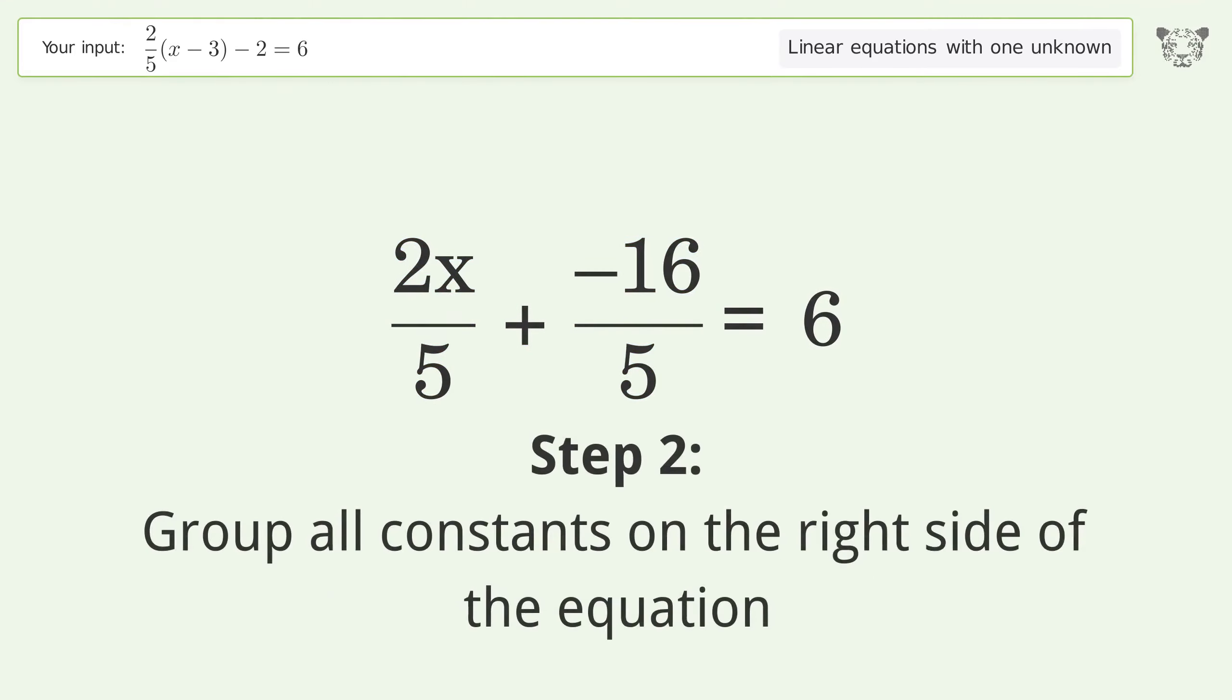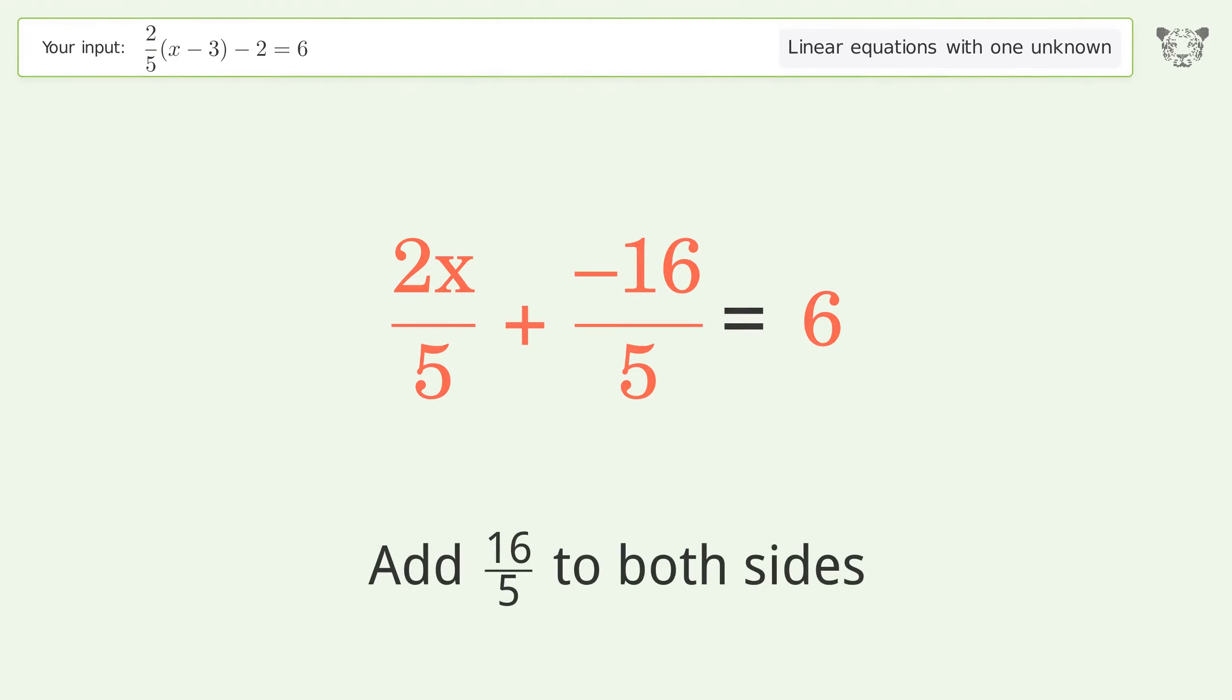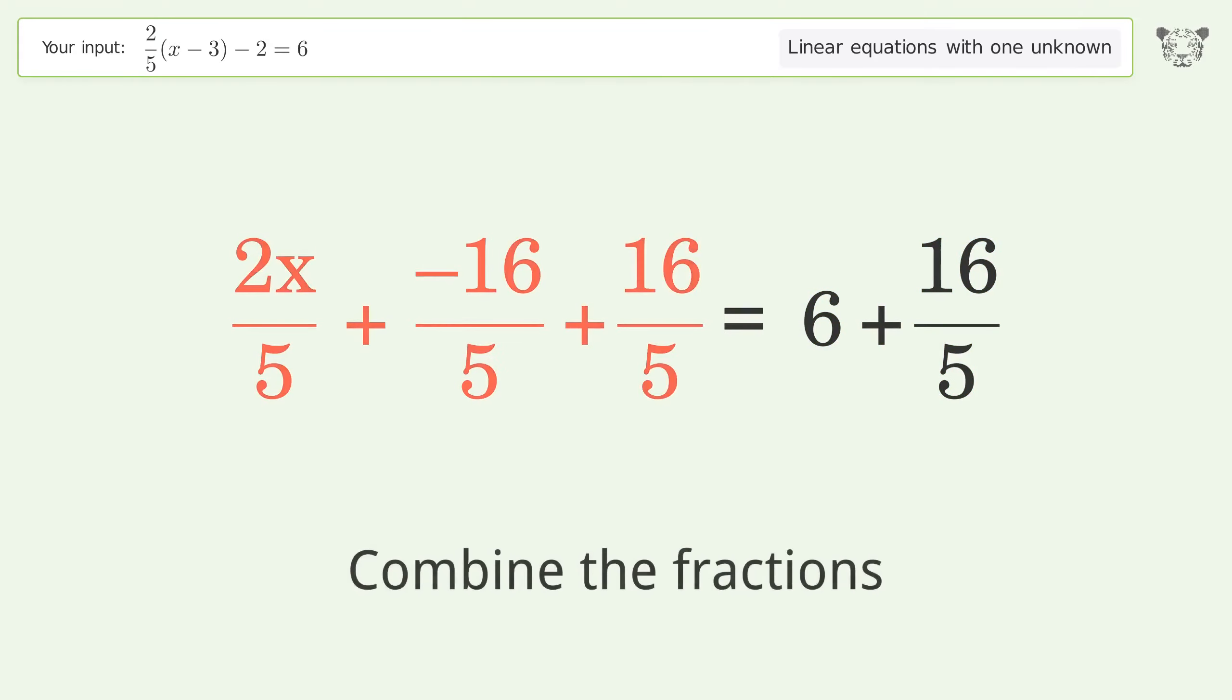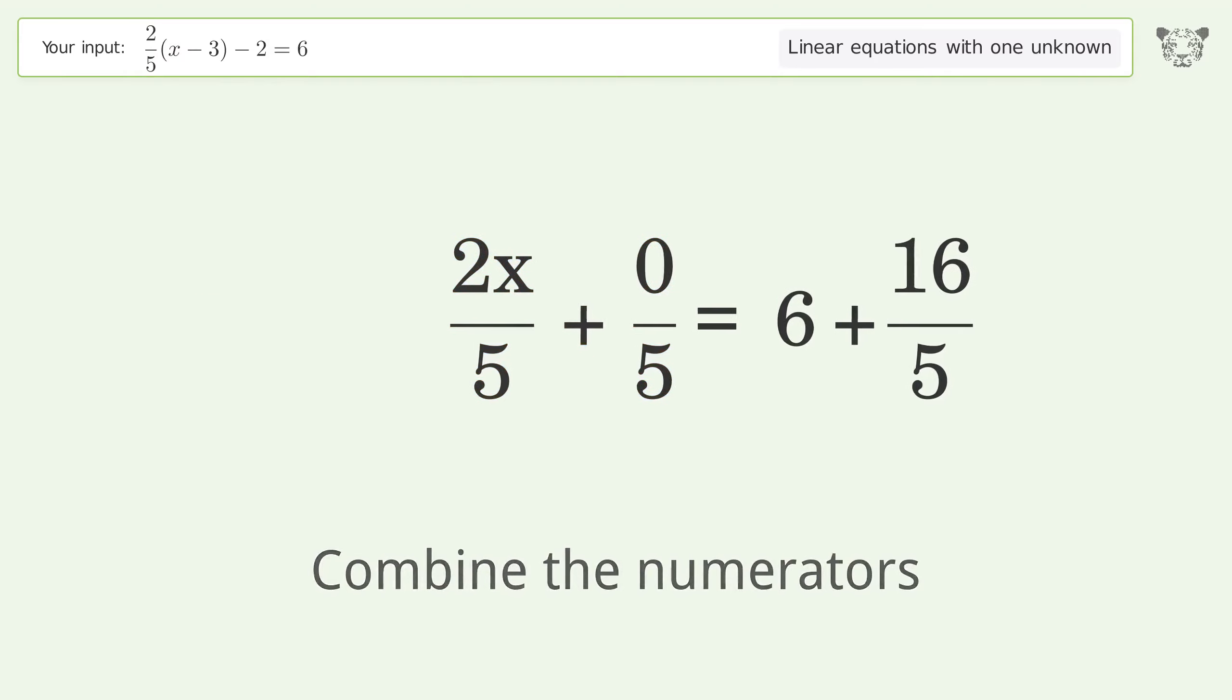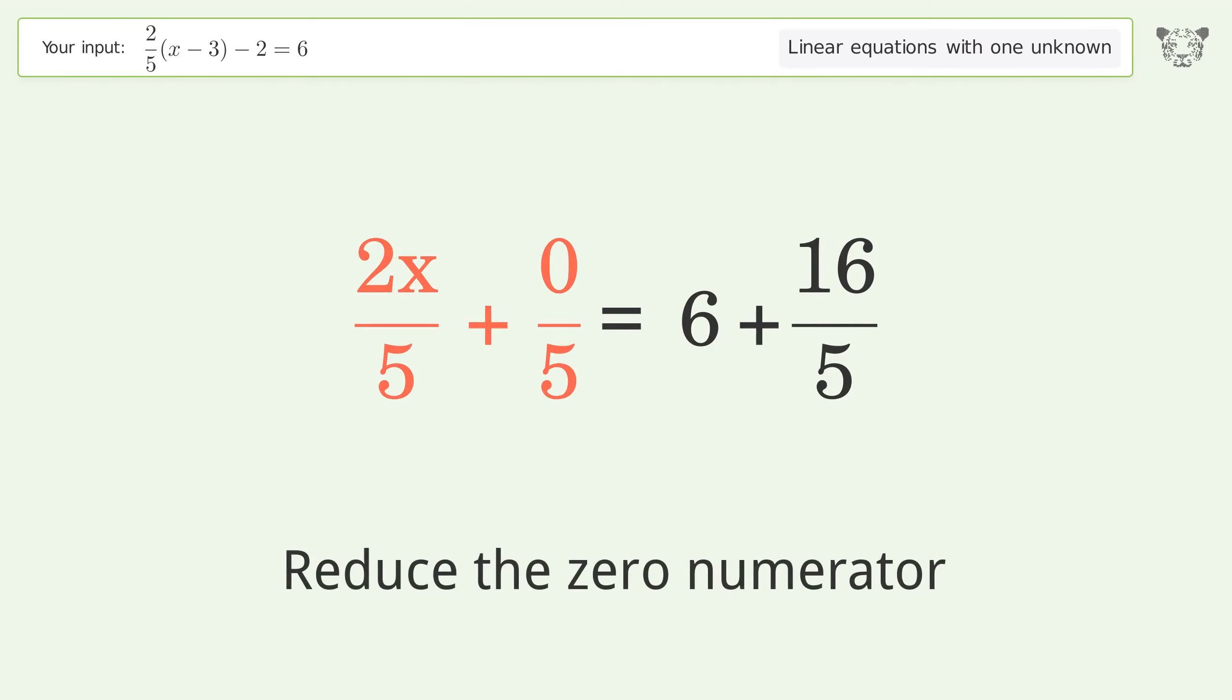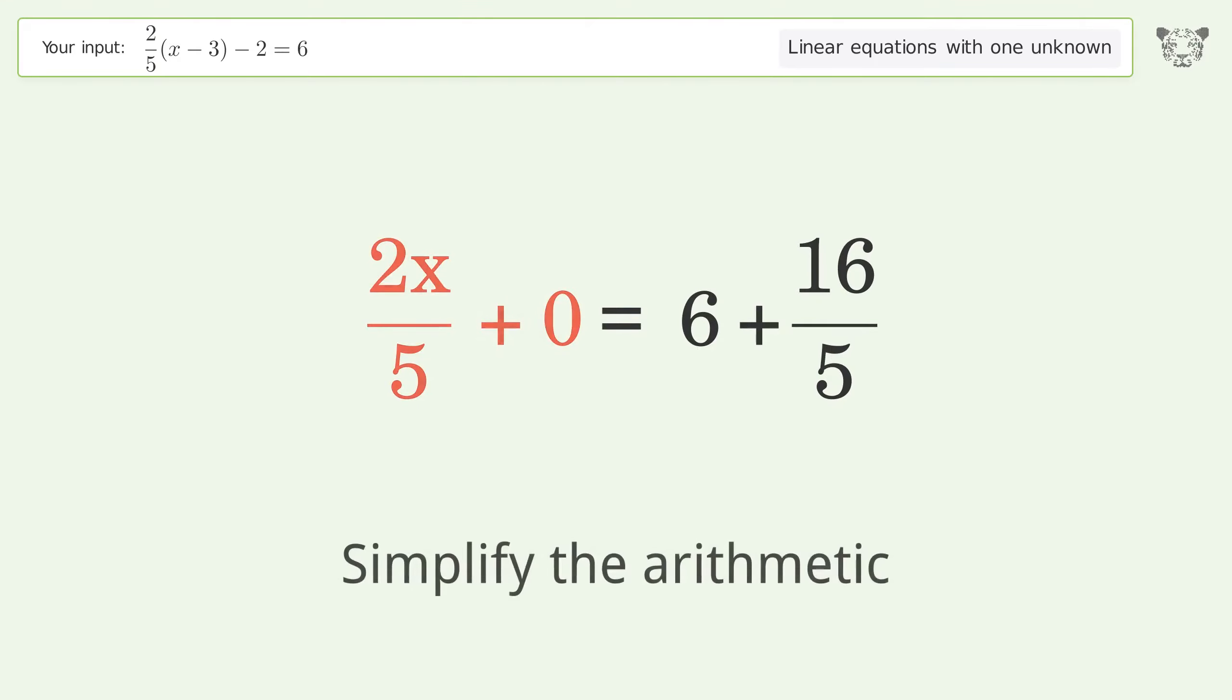Group all constants on the right side of the equation. Add 16 over 5 to both sides. Combine the fractions. Combine the numerators. Reduce the zero numerator. Simplify the arithmetic.